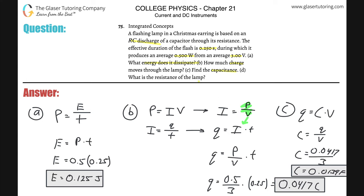And then last but not least, it says what is the resistance of the lamp? Letter D. So we can do this in a couple of ways. We can use Ohm's law if you like.